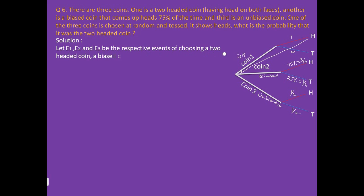Now let's solve this question. Let E1, E2, and E3 be three events. E1 is for two-headed coin, E2 is for biased coin, and E3 is for unbiased coin.